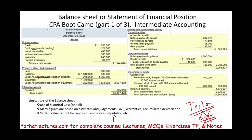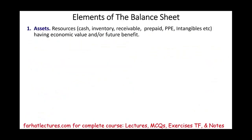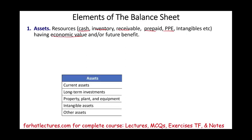Now we're going to look at the various elements from an overall perspective. The elements of the balance sheet are: assets — the resources of the company such as cash, inventory, receivable, prepaid, property, plant and equipment, and intangibles, all of which have economic value or future benefit. Assets will be broken down into a current section, long-term investments, property/plant/equipment, intangibles, and other assets. Most companies have four sections; if something doesn't fit, it goes into other assets.